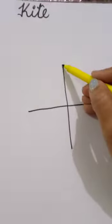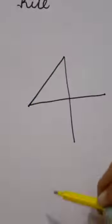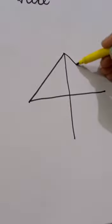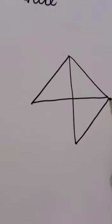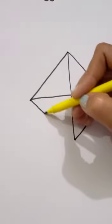Ab hum isko join karenge with slanting line like this. Ab yaha se isko bhi join kardo. Like this. Isko yaha se join kardo. Aur isko yaha se join kardo.